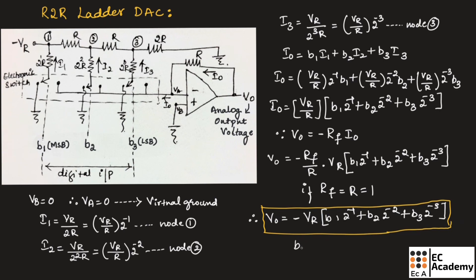Here B1 is the MSB bit and B3 is the LSB bit. This is about R2R ladder digital to analog converter. Hope you have understood the topic. Thank you.